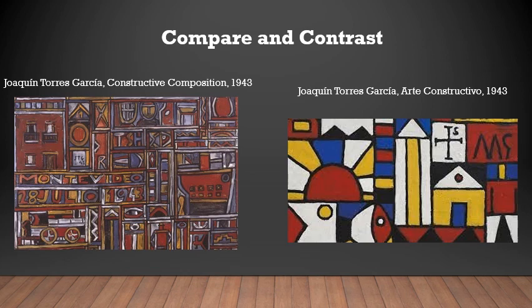In the Constructive Composition, it uses darker shades and duller shades of colors, whereas in Arte Constructivo, it uses bright colors.